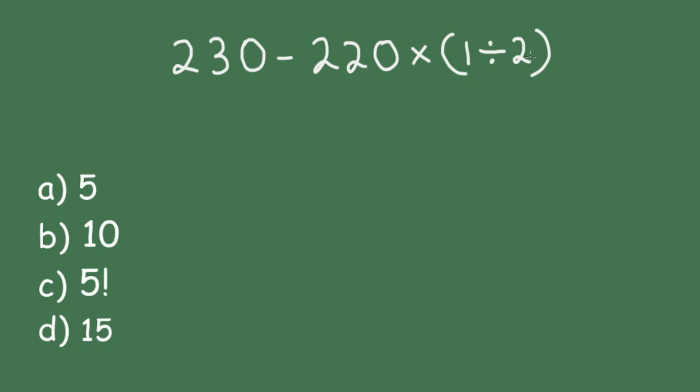Here we have 230 minus 220 times 1 divided by 2, and we have four options: 5, 10, 5 factorial, and 15.